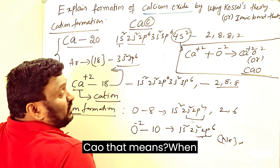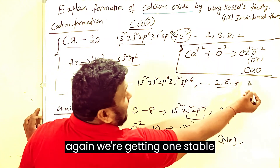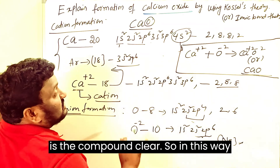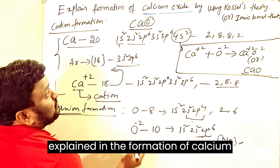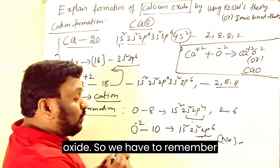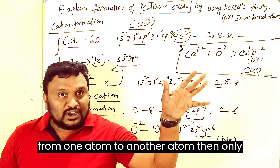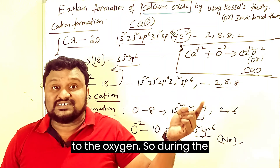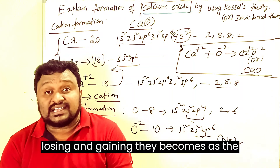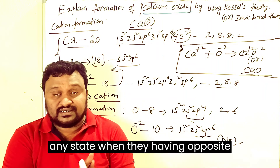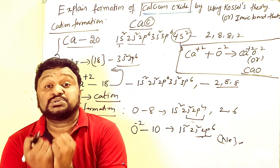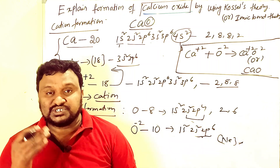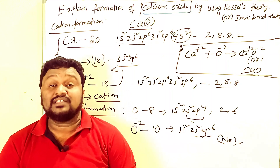The combination of Ca²⁺ and O²⁻ gives us the stable compound CaO — calcium oxide. In this way, the ionic bond is explained through the formation of calcium oxide. Remember: when electrons are transferred from one atom to another, an ionic bond is created. Here electrons transfer from calcium to oxygen; they become ions with opposite charges, attract each other, and form calcium oxide. If you understood this, please like, share, comment, and subscribe for all notifications. Thank you for watching.